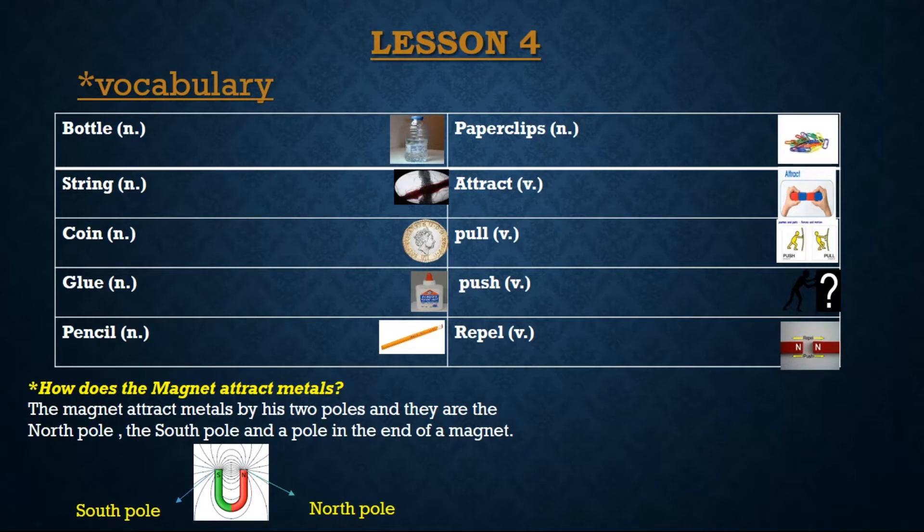Okay, how does a magnet attract metals? The magnet attracts metals by its two poles, and they are the north pole, the south pole, and a pole in the end of a magnet. We have two poles in front and the straight side and the center of a magnet.